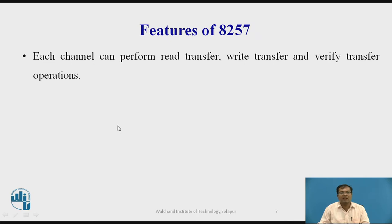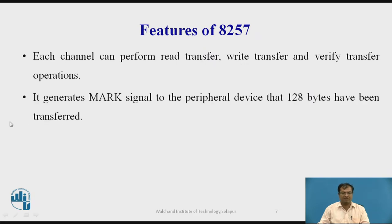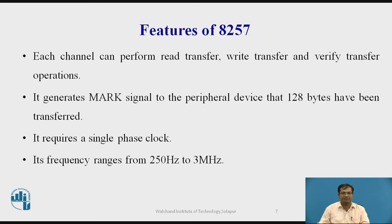Each channel can be programmed independently. Then each channel can perform read transfer, write transfer, and verify transfer operations. It generates marked signal to the peripheral device that 128 bytes have been transferred. It requires a single phase clock cycle. The frequency range varies from 250 Hz to 3 MHz. It operates in two modes, that is master mode and slave mode.